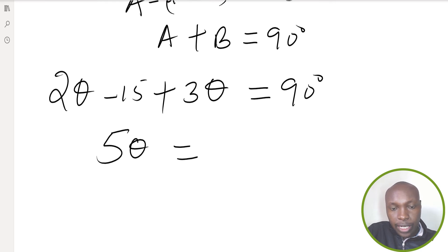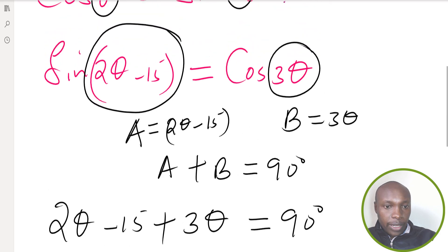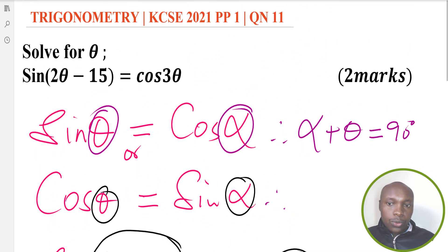And therefore, angle θ gives 21 degrees, and we have solved for that angle. So that is how you're supposed to solve that question.